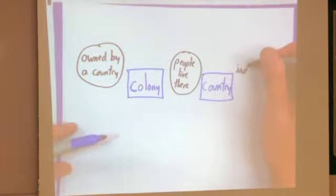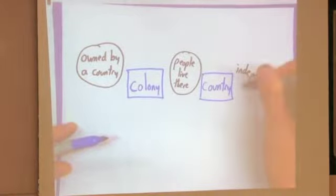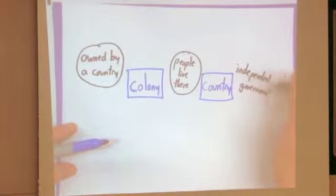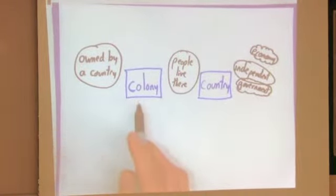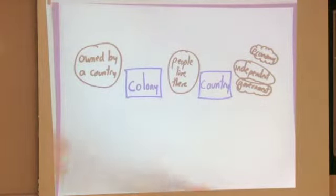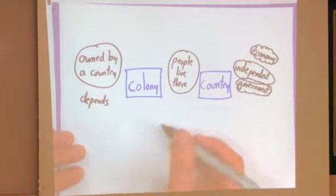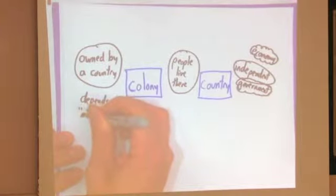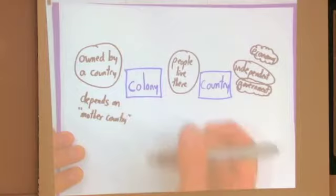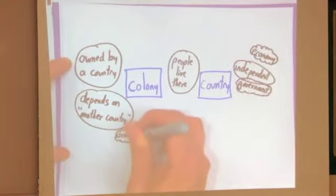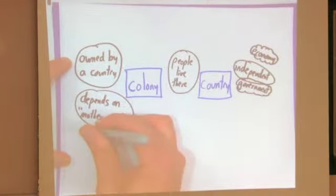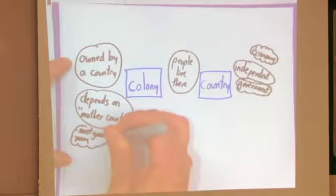But a country is independent, has an independent government, independent in lots of ways. So if you think of its government as independent, its economy, lots of things about a country are independent. The colony depends on the country for many things. That's really part of the definition of a colony. So it depends on what's called the mother country. That's the phrase that was often used back when there were many more colonies. It depends on the mother colony for things like an army. A colony doesn't have its own army, for example. And also for most, or at least we could say many, different kinds of goods, different kinds of things.